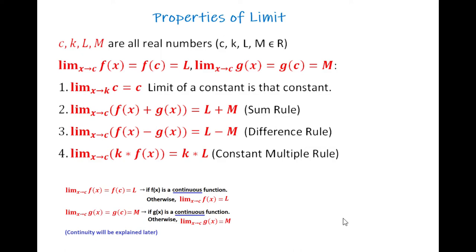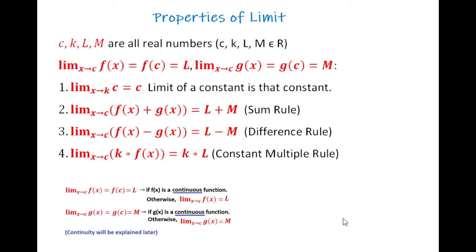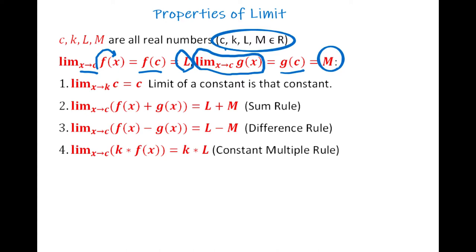Here we have properties about limits. Suppose that c, k, l, and m are all real numbers. Suppose the limit of f(x) as x goes to c equals f(c), which we call l, and the limit of g(x) as x goes to c equals g(c), which we call m. The limit of any constant c as x goes to any real number k is always equal to that constant c.